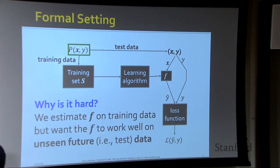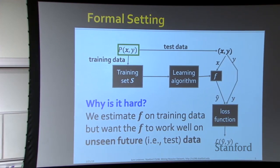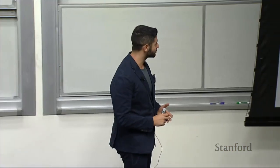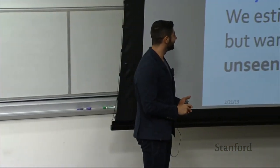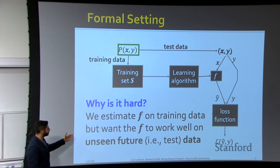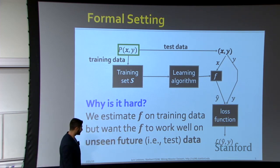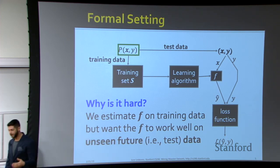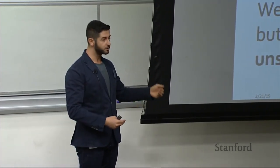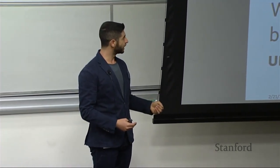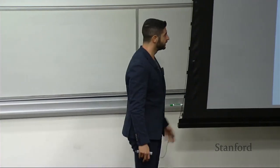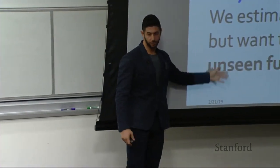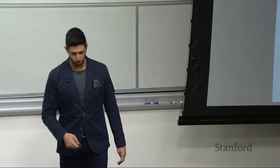This is our task — I've basically summarized all the challenges of machine learning in five minutes. Why is this extremely hard? Because when we estimate F on our training data, we also want this to work well on unseen future test data. Sometimes this unseen future data looks very similar to the training data, coming from the same probability distribution; sometimes it's much different. That's why this is a very challenging problem.